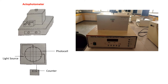This is the actophotometer — the actual apparatus. When we open the lid, inside the box we can see a circular type of arena. Here this is the light source, and these are the photocells. When light falls on the photocells, a path of light is created.